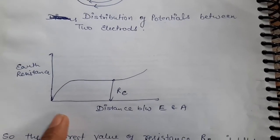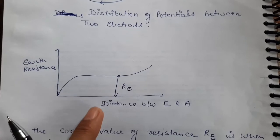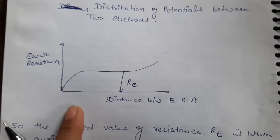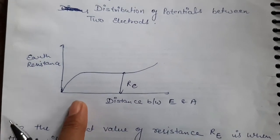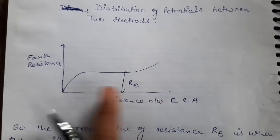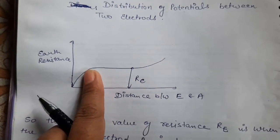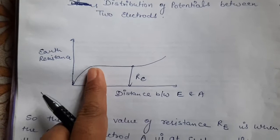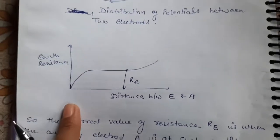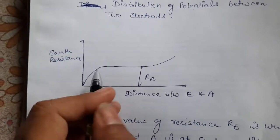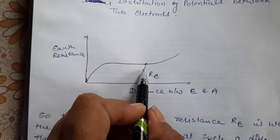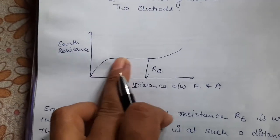This figure shows the variation of earth resistance with distance between E and A. Initially when the distance increases, earth resistance rises. In the middle part, the earth resistance is constant. Then again in this part, the earth resistance increases.